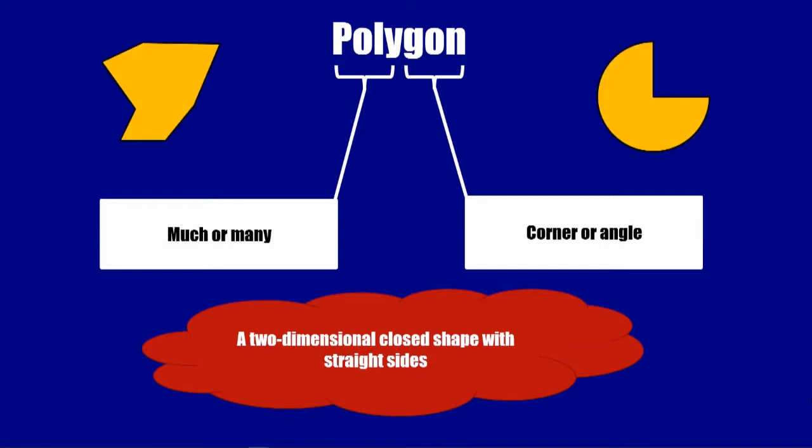On the left you can see an example of a polygon - it's got straight sides, it's a closed two-dimensional shape. But on the right that shape there has a curved side, so it's not a polygon.